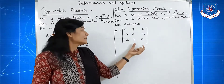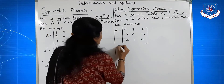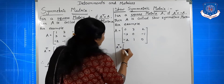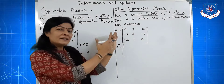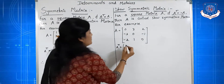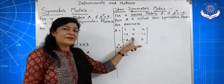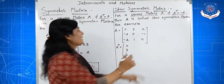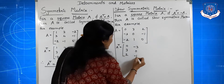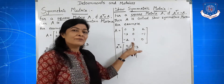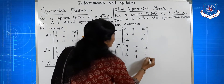Let us find A transpose. The first row becomes the first column: 0, 3, 2. The second row becomes the second column: minus 3, 0, minus 1. And the third row becomes the third column: minus 2, 1, 0.